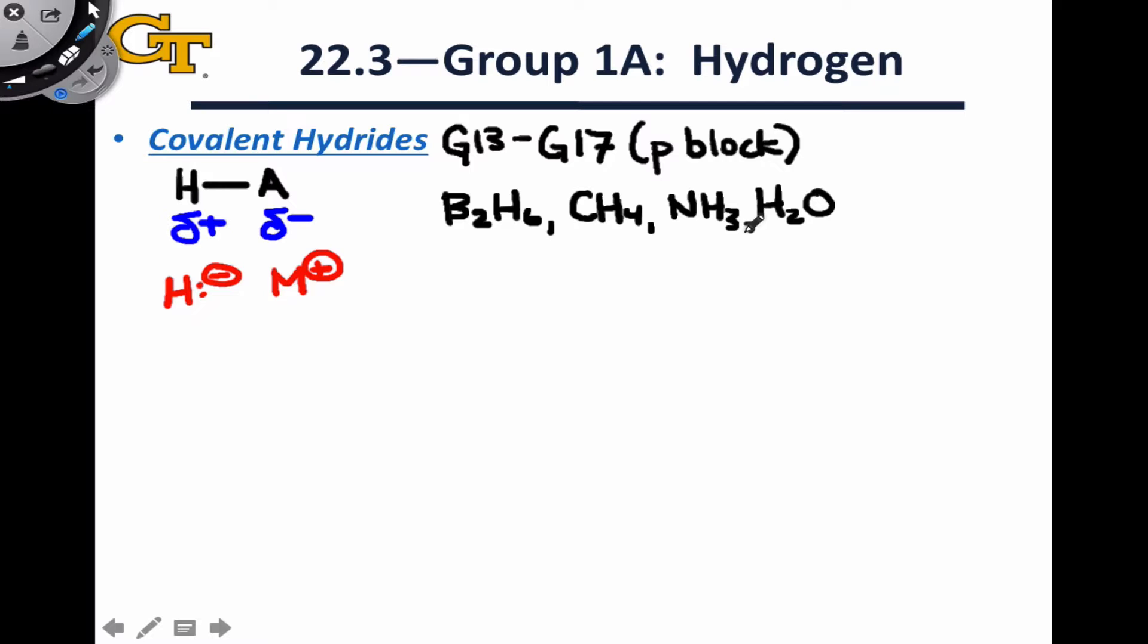Even as we move down the periodic table within the main group to elements that are more metallic in their elemental form, we still end up with covalent hydrides. Great examples of this are SnH4, tin-4 hydride, or stanane, GeH4, which is known as germane, SiH4, which is known as silane, so on and so forth. With the exception of a couple of hydrides whose existence is uncertain at this point, all of the hydrides within the P block are covalent hydrides.